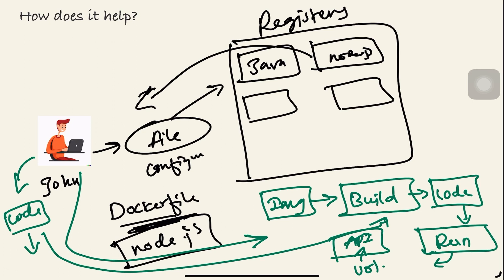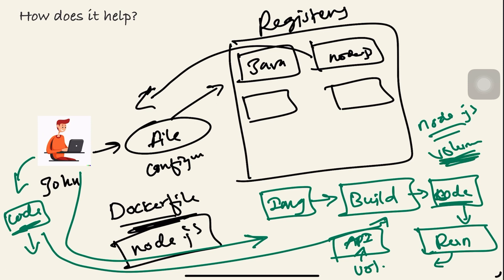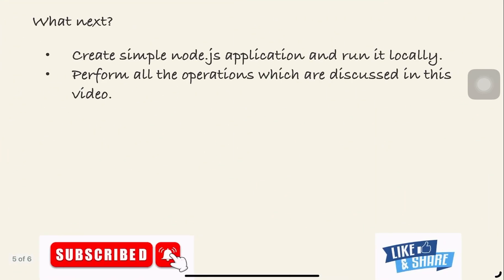Once the container runs, it gives a URL and through that URL we get API access. Notice we never installed Node.js locally — we didn't need to configure volumes manually either. The code is copied into the volume that's assigned to the Docker container itself, along with the network configuration, and the application runs inside the Docker container.